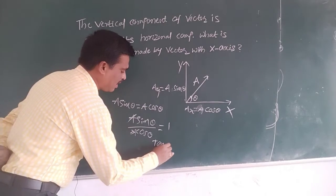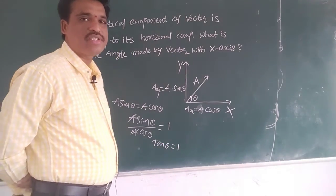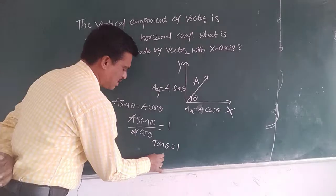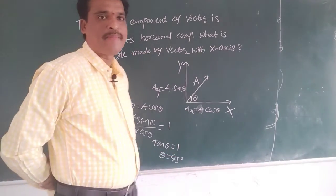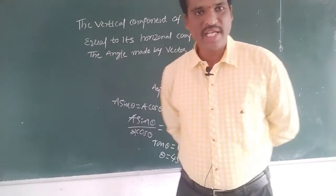Tan theta. Tan theta equals 1, so theta equals how much? Forty-five degrees. This is how much, 45 degrees. This is the problem, okay, clear?